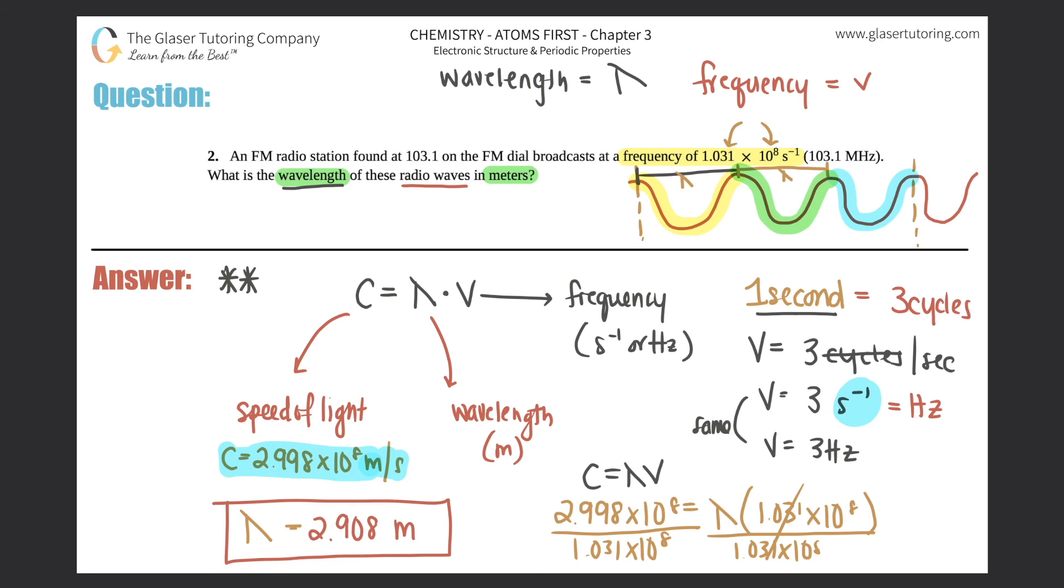So that's the distance between the tip to tip of your wave. So this would be 2.908 meters, just to put it in perspective, of this radio wave. Guys, thank you so much for tuning in. Hopefully this helped. Remember this formula. We're going to be using it so many times in this chapter. I'll see you guys in question number three. Have an awesome day.